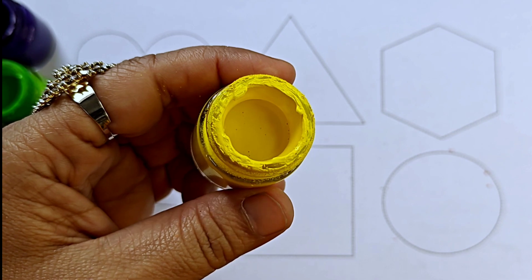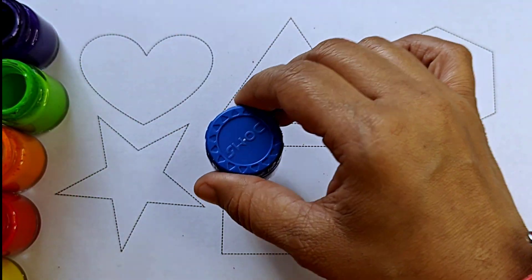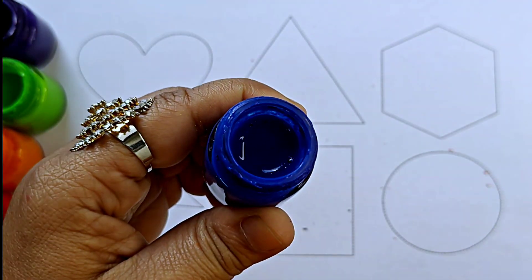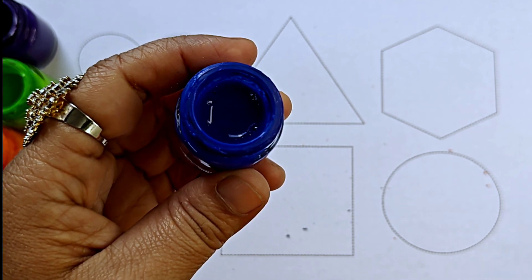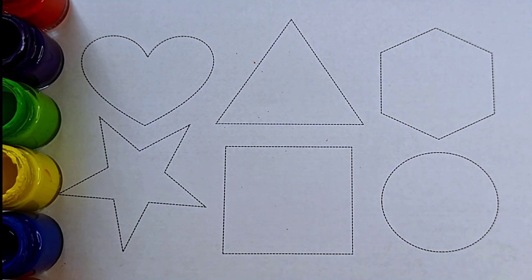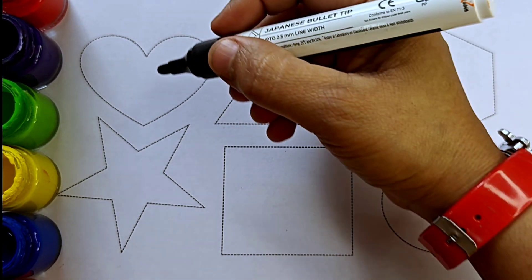Yellow, Y-E-L-L-O-W, yellow color. Blue, B-L-U-E, blue, blue color. This is black color. Let us draw the shapes.